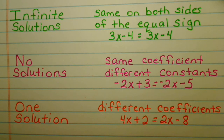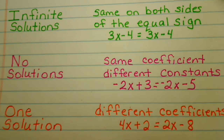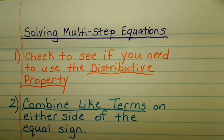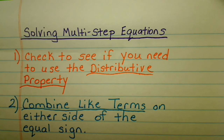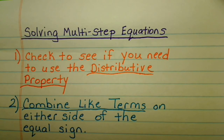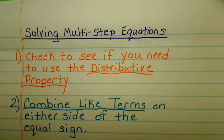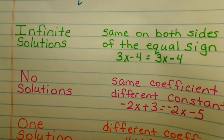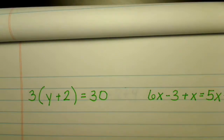So let's say you are asked to determine how many solutions an equation has. The first thing you want to do is follow the first two steps for solving a multi-step equation: check if you need to use the distributive property by looking for parentheses, then combine like terms on either side of the equal sign. After you've done that, you can determine if you have one solution, no solution, or infinite. That's what we're going to do right now — let's look at some examples and decide what type of solution.